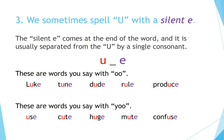Number 3: we sometimes spell OO with a silent E. The silent E comes at the end of the word and is usually separated from the OO by a single consonant. Words you say with OO: tune, dude, rule, produce. Words you say with U: use, cute, huge, mute, confuse.